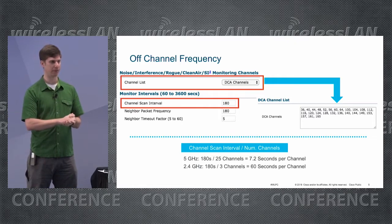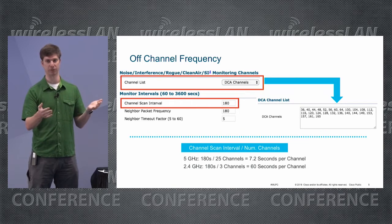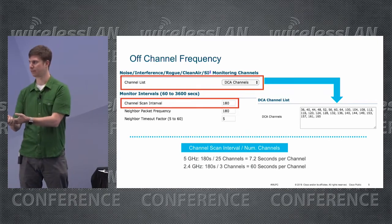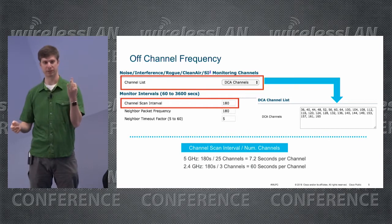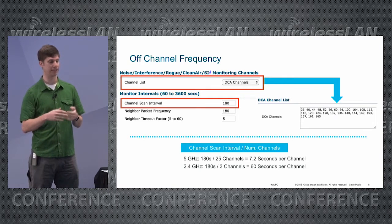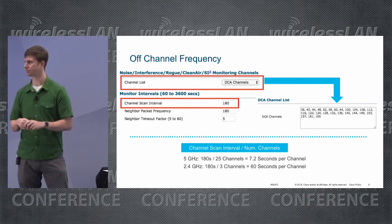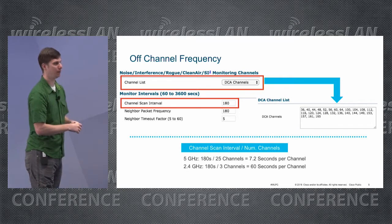If you don't have that many channels configured — for example if you're not using DFS channels — you could have nine channels, so the AP goes off-channel less frequently. In 2.4 GHz with three channels, the AP goes off-channel every 60 seconds, so the frequency really depends on the band. On dual 5 GHz APs like the 2800 and 3800, the flexible radio actually goes off-channel on both bands, so you'll see slightly more frequent off-channel scans.